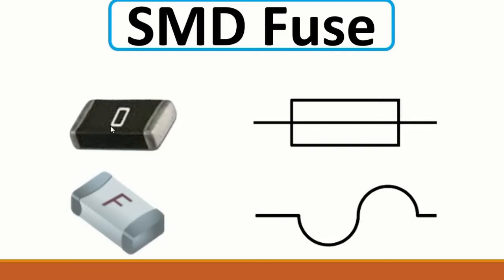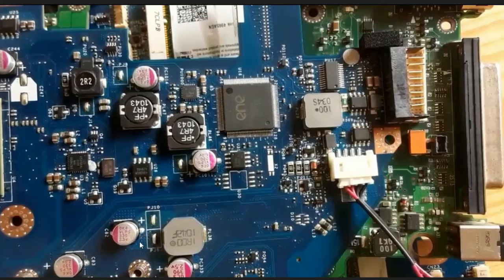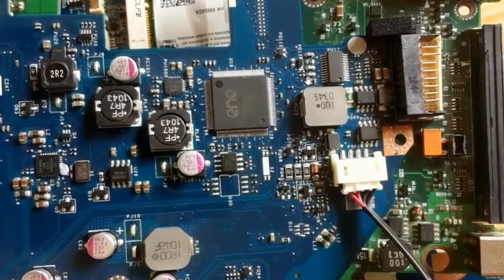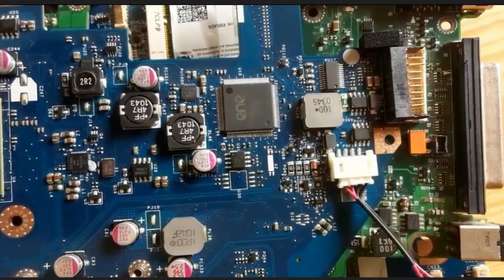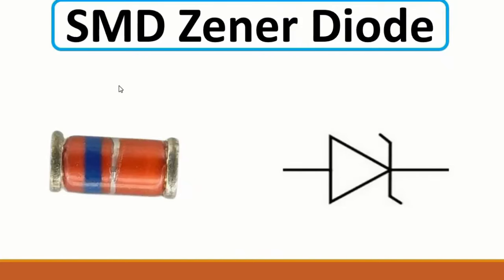Zero ohms also indicates a fuse, but we call this a fuse resistor. Let's see the motherboard if we can find any fuse resistor. As you can see, this is the fuse resistor. Then we have the SMT Zener diode - the purpose of the Zener diode is to stabilize the current in the circuit.